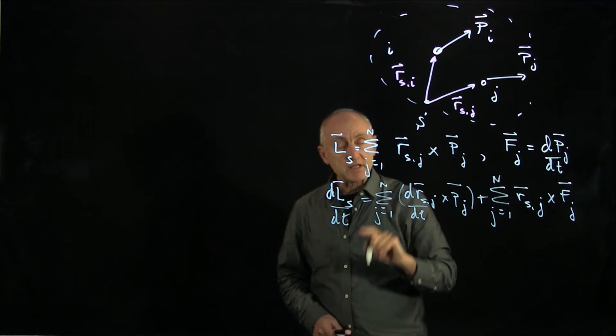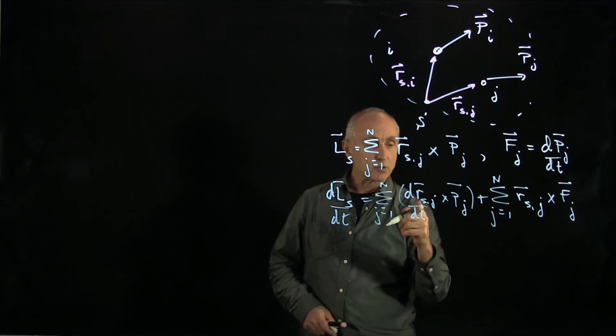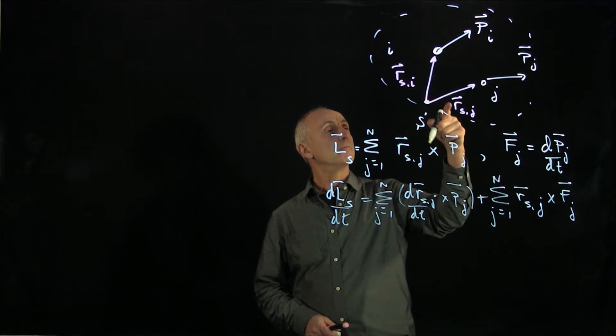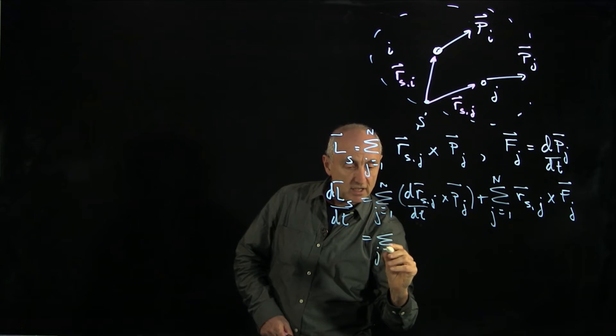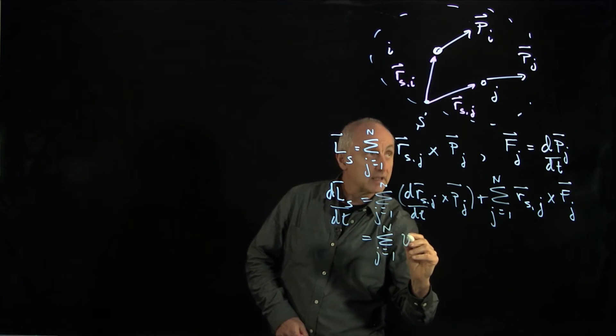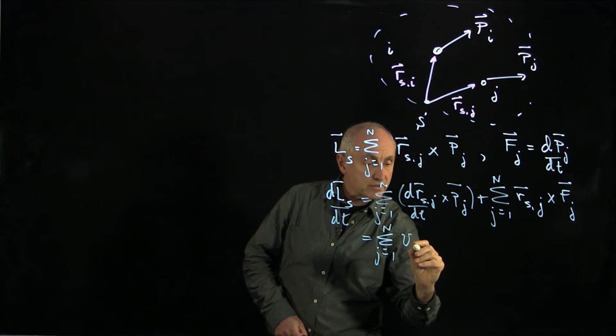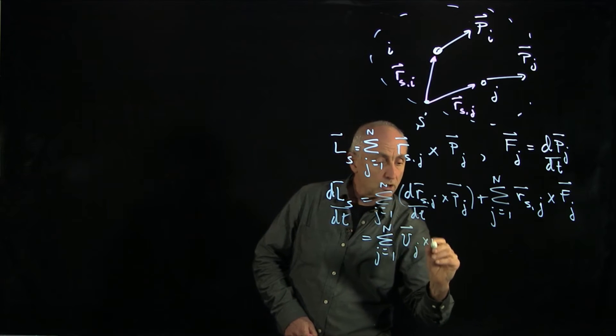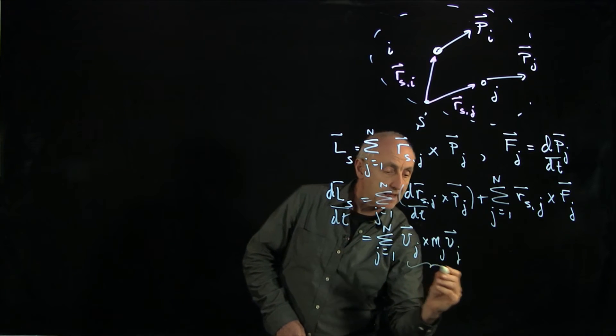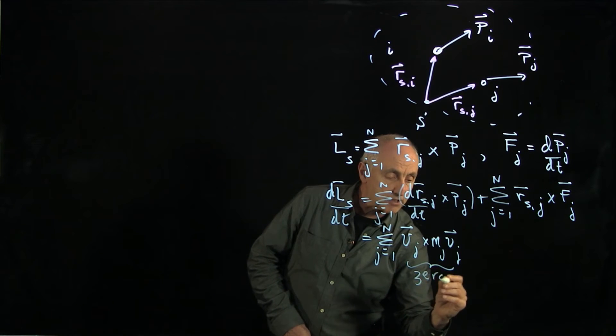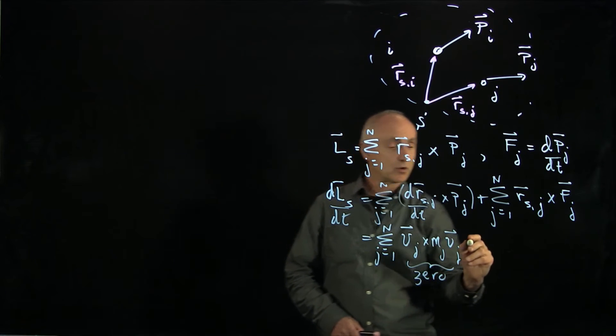Now, this first piece, the derivative of the vector from s to the j-th particle is the velocity. So we have j equals 1 to n of v, the velocity of the j-th particle, cross mj vj. And that's 0, as we know that a vector cross product with itself is 0.